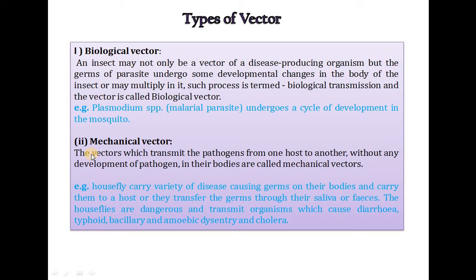The next category is the mechanical vector. The vector which transmits the parasite from one host to another without any development of the pathogen in its body is called a mechanical vector. In a mechanical vector, only mechanical transmission of the parasite occurs — no developmental stage takes place within the mechanical vector. For example, houseflies carry a variety of disease-causing germs on their bodies and transfer the germs through their saliva, fecal matter and body parts.